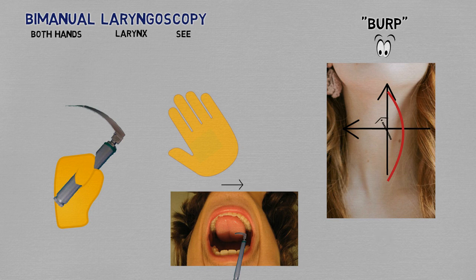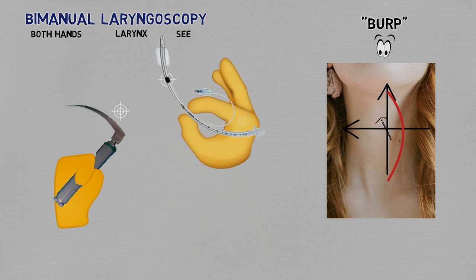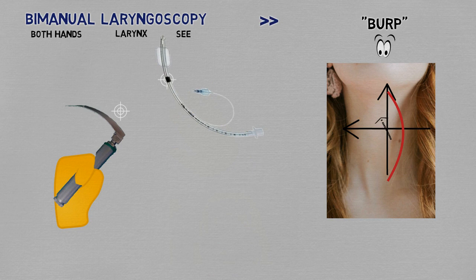But even better is bimanual laryngoscopy. After you use your left hand to place the blade in the right spot, use your right hand to move the larynx and try to find the perfect place for that specific patient in that specific position. When you're there, ask your assistant to hold the larynx wherever you're holding it, and then use your free hand to pick up the tube and place it. Clearly this is more appropriate than assuming that the assistant will just find the place with burp, or perfectly follow verbal redirections from you.